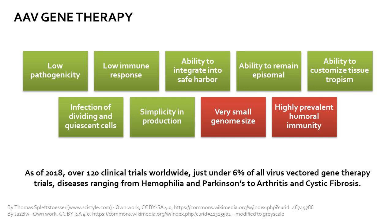The AAV is among the most well-characterized viruses, at least in part due to its simplicity and low pathogenicity. As of 2018, the vector has been utilized in over 120 clinical trials worldwide and comprises just under 6% of virus vector gene therapy trials. Properties such as low pathogenicity, ability to integrate into a safe harbor or remain episomal, specific tissue tropism, infectivity of both dividing and quiescent cells, as well as simplicity in manufacturing, make the AAV a powerful tool in the hands of preclinical and clinical researchers. Active research is also ongoing to overcome several of AAV's limitations, including the small genome size and highly prevalent humoral immunity in the general population, by approaches such as genomic complementation or capsid engineering.